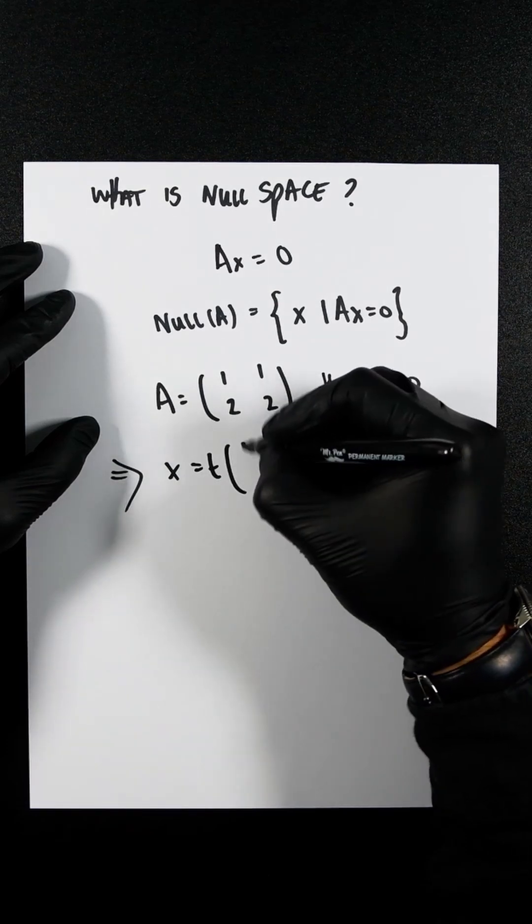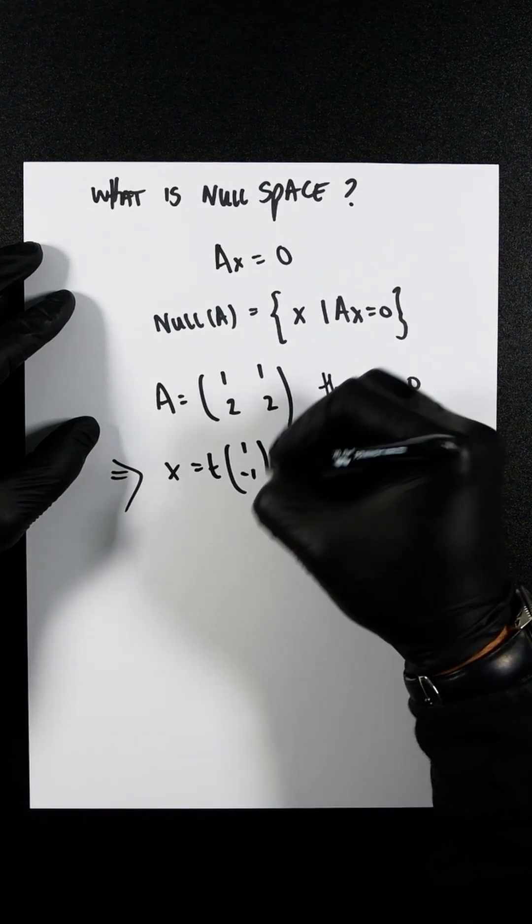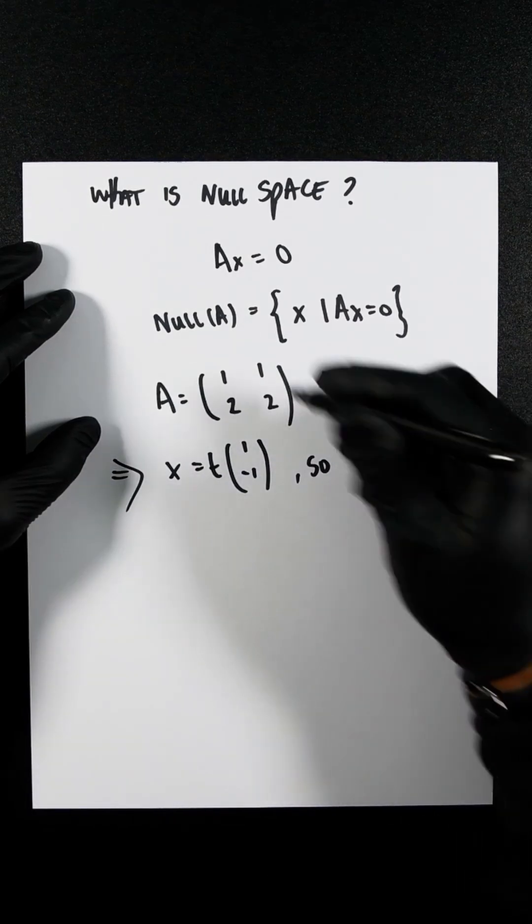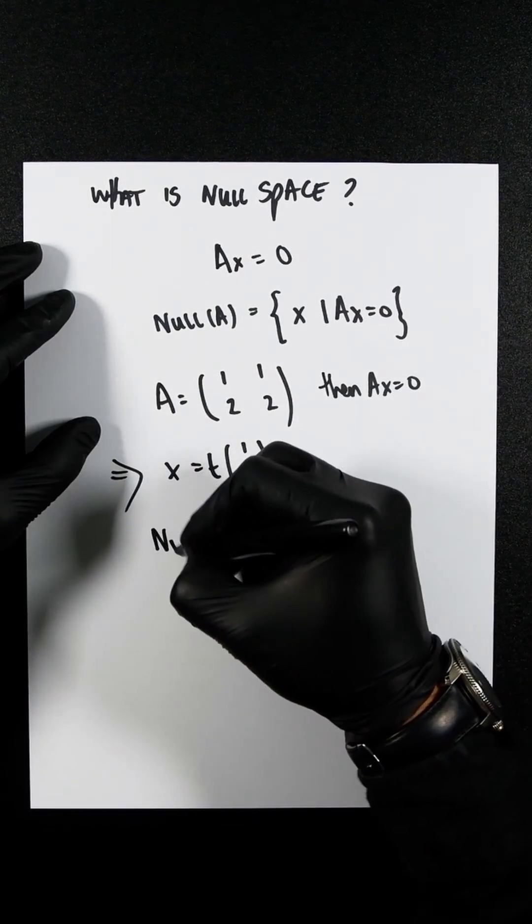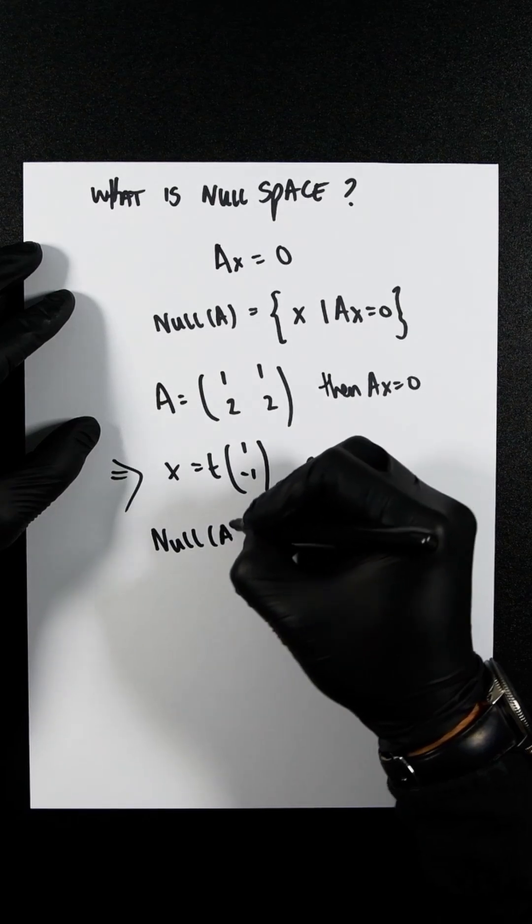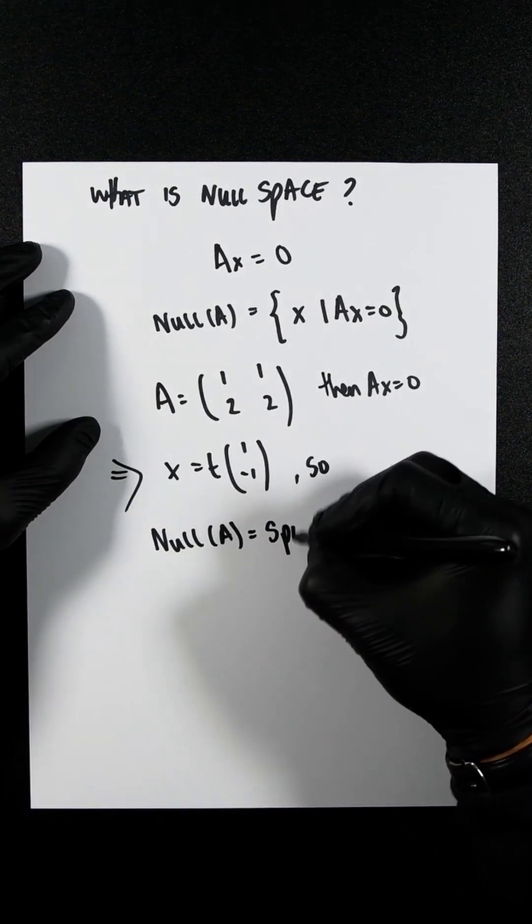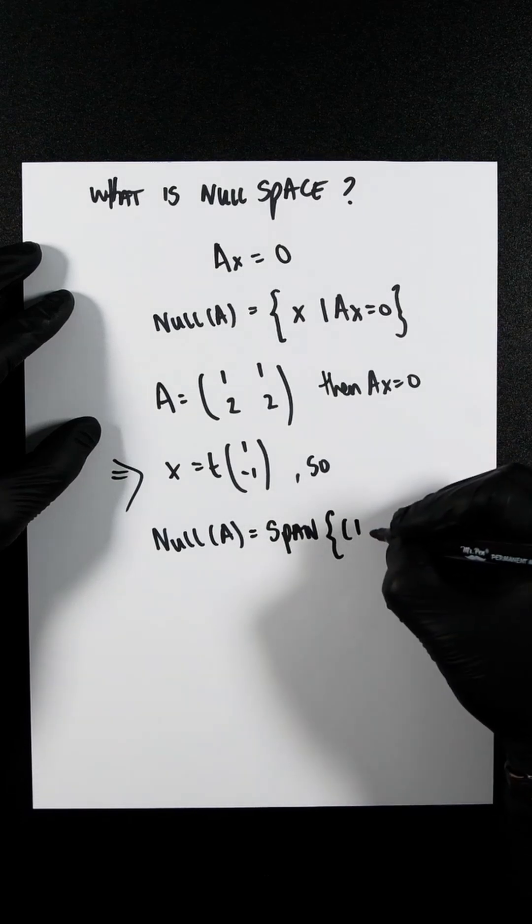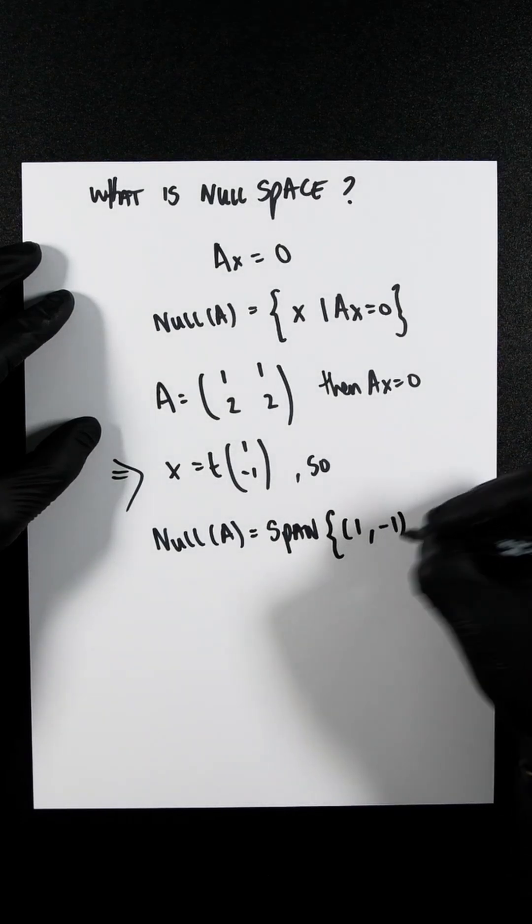x equals t times (1, -1). So the null space of this matrix would be null A, which is span, and then it would be (1, -1).